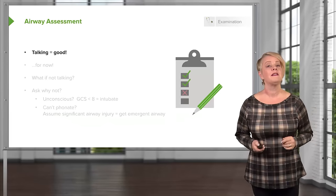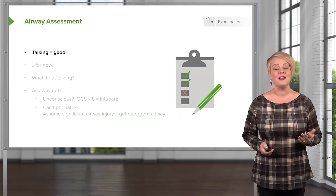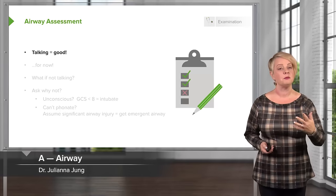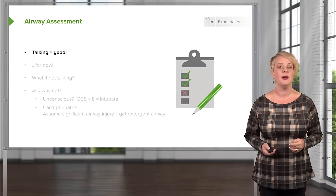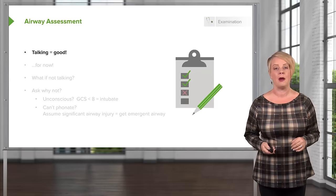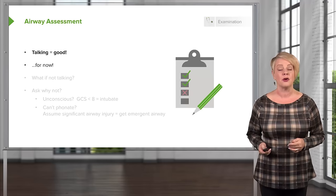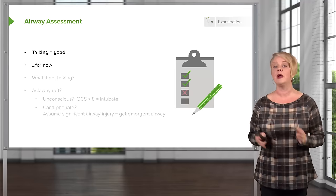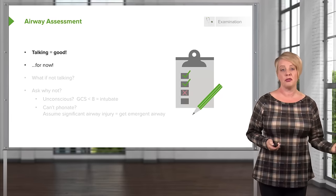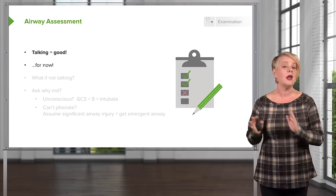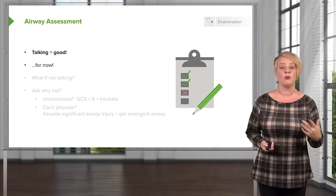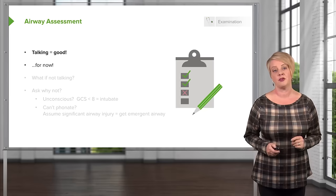When we talk about assessing the airway, the first thing to do is simply speak to the patient — ask them their name, get them to tell you what happened. Any patient who's able to talk by definition has a patent airway, and that's clearly a good sign. However, just because you have a patent airway right now doesn't mean you're going to have one 15 or 30 minutes from now. So you want to not only identify current airway obstruction, but also risks for potential future airway obstruction.